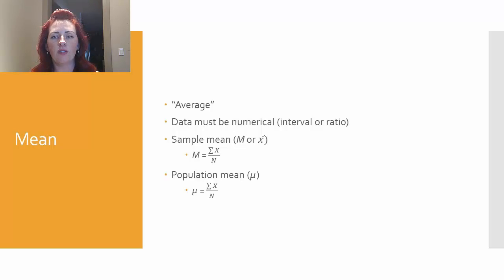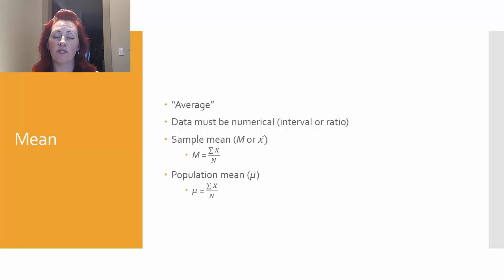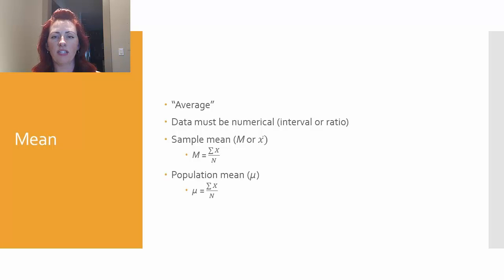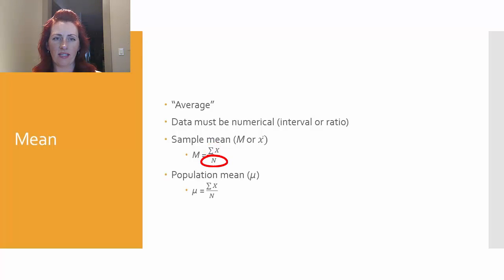We can see here two formulas listed that look basically the same. The first is for how to calculate the sample mean — if you only have your data set that you want to calculate the average for — versus the population mean, which is when you would have all of the data for the population. For both, whether calculating the sample mean or the population mean, you need to sum all of the data for a particular variable (the sum of x), and then divide by n, which represents the number of values within that data set.